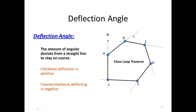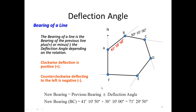A deflection angle is the amount of deviation from a straight line to stay on course. Clockwise rotation is positive, and counter-clockwise rotation — which is this direction — would be considered to be a negative deflection angle.